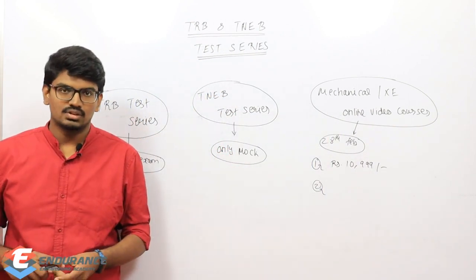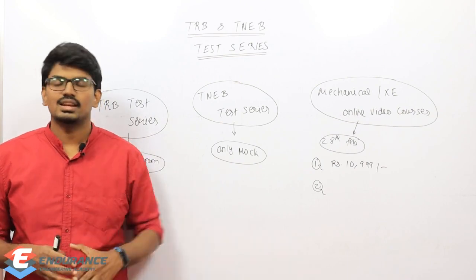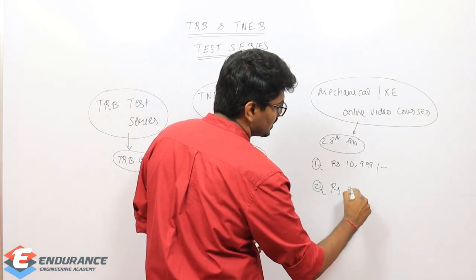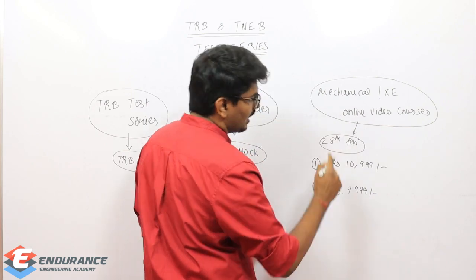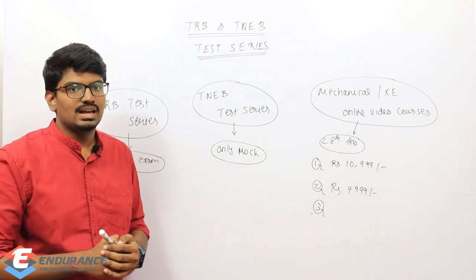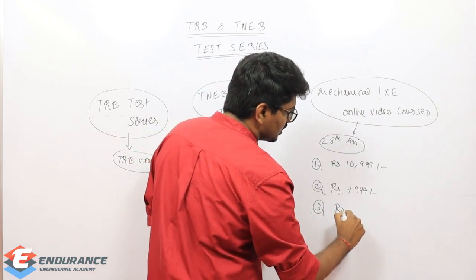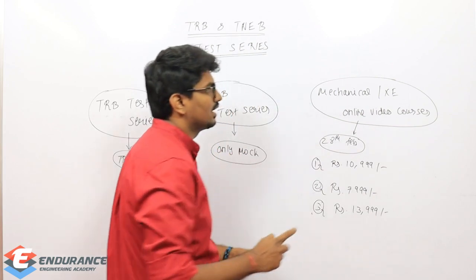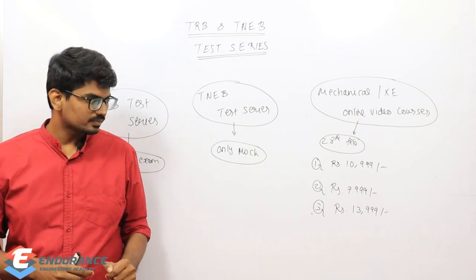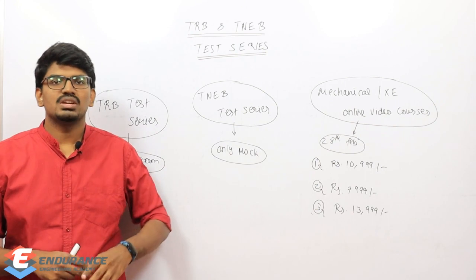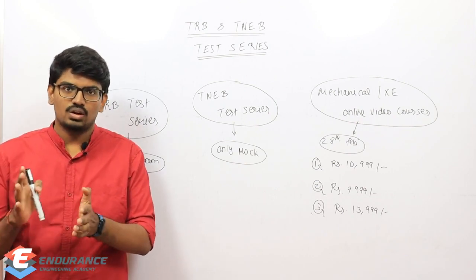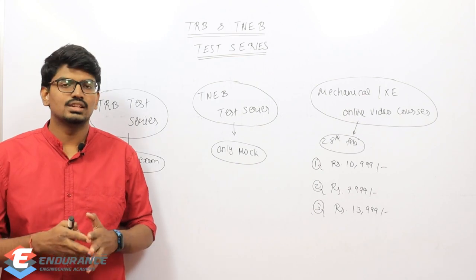You can go through our engineering science video on another channel. XC plus ME - mechanical plus XC combined - is 13,999. It includes test series, doubt support, and video course. Maybe you need to prepare for TNEB or TRB, or maybe for your relatives or juniors, mostly college-going juniors. The price I'm giving is something like one-third minimum, mostly one-fourth or one-fifth the price of other institutes.